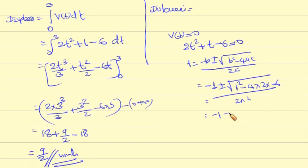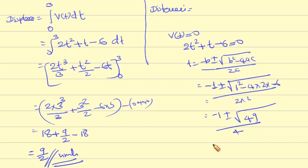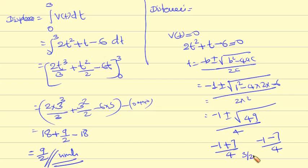That equals [-1 ± √(1 + 48)] / 4 = [-1 ± √49] / 4 = [-1 ± 7] / 4. So the two roots are: (-1 + 7)/4 = 6/4 = 3/2, and (-1 - 7)/4 = -8/4 = -2.